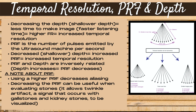Let's talk about the relationship between temporal resolution, PRF, and depth. Decreasing to a shallower depth means less time to make the image and a faster listening time, which results in a higher frame rate and increased temporal resolution. PRF, or pulse repetition frequency, is the number of pulses emitted by the ultrasound machine per second. A shallower depth equals an increased PRF and increased temporal resolution — PRF and depth are inversely related; as depth increases, PRF decreases. Using a higher PRF decreases aliasing. However, decreasing the PRF can be useful when evaluating stones, as it allows twinkle artifact — a signal that occurs with gallstones and kidney stones — to be visualized.